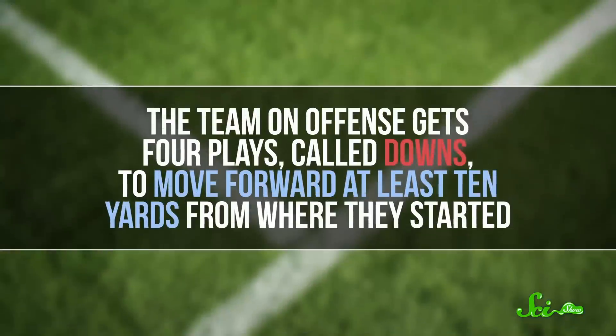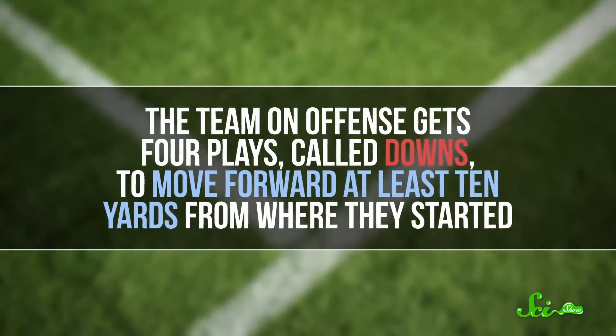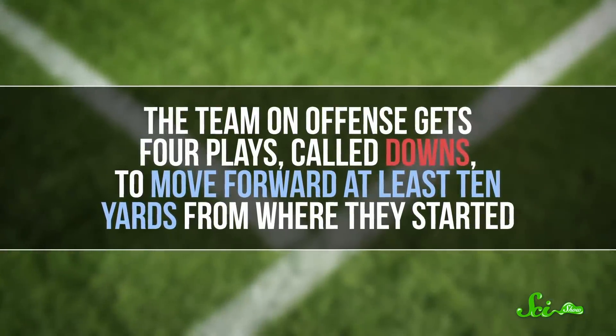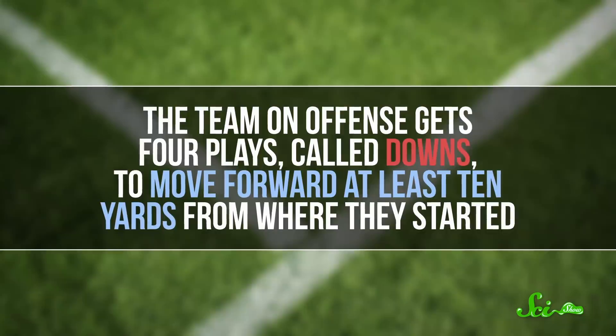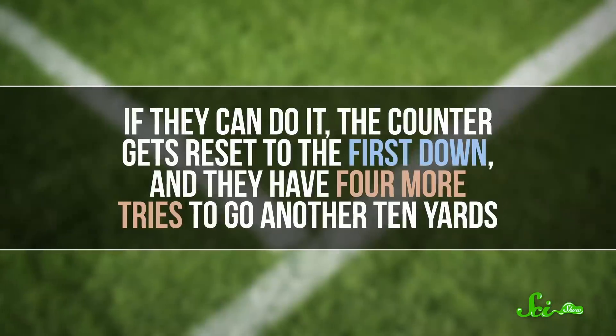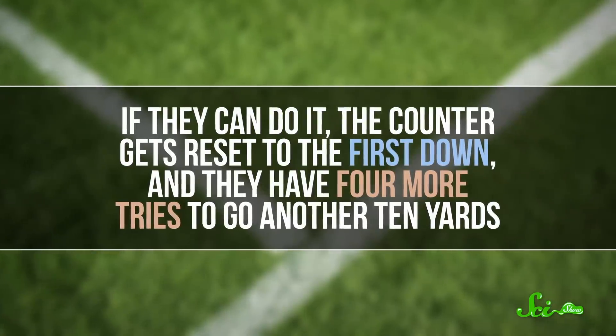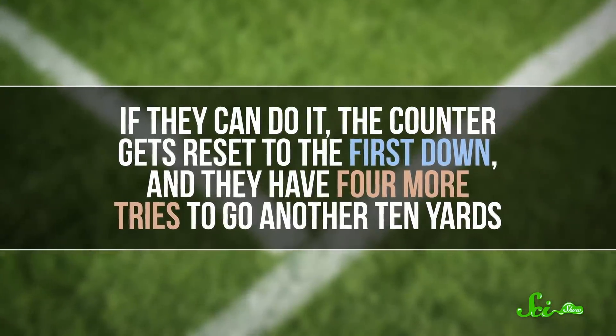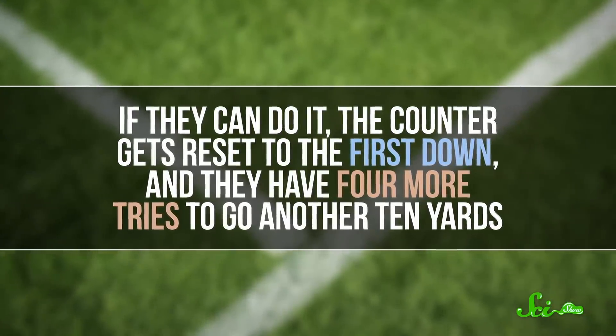If you're not familiar with American football, the first down line is pretty straightforward. The team on offense gets four plays, called downs, to move forward at least ten yards from where they started. If they can do it, the counter gets reset to the first down, and they have four more tries to get another ten yards. If they can't, the other team gets the ball, and a lot of people probably scream at their television.